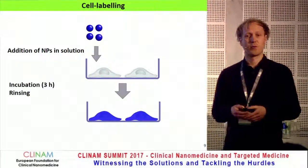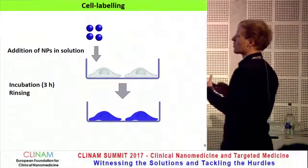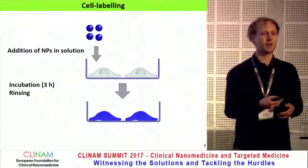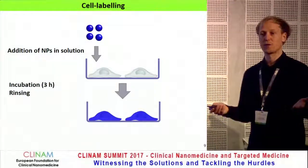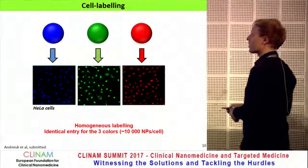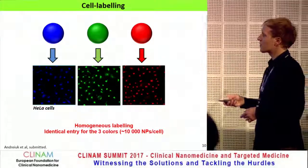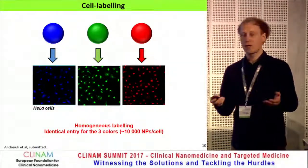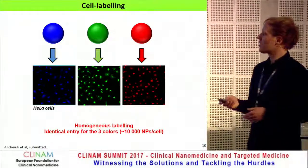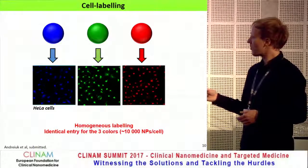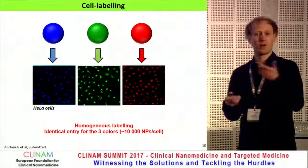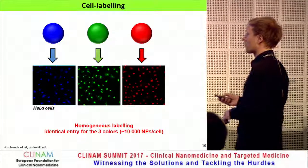The cell labeling process is quite straightforward. We simply add a solution of the nanoparticles to cell media, incubate the cells for a couple of hours, rinse, and then we can work with the cells as before, but now with labeled cells. This works very nicely for all three colors and we get quite homogeneous labeling, with practically identical entry into the cells for all three colors, at around 10,000 nanoparticles per cell.